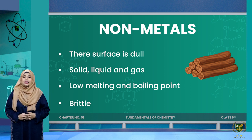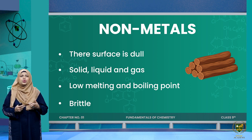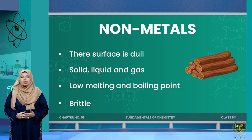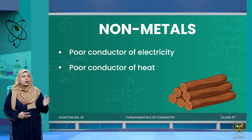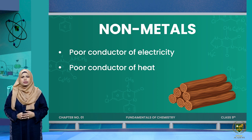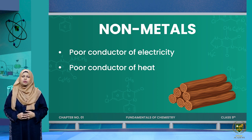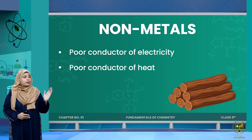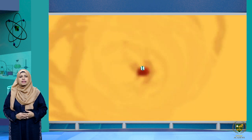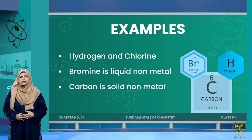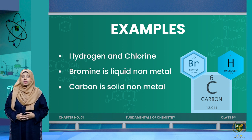Non-metals are also brittle — meaning they will break very easily when pressure is applied. They are poor conductors of electricity; electricity either doesn't pass through them or passes with great difficulty. They are also poor conductors of heat. Examples among gaseous non-metals include hydrogen and chlorine.